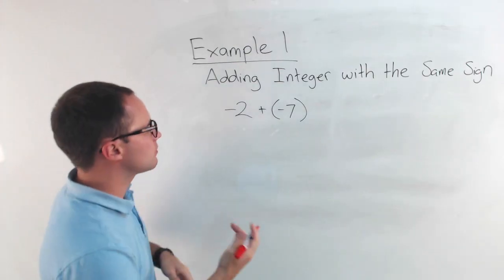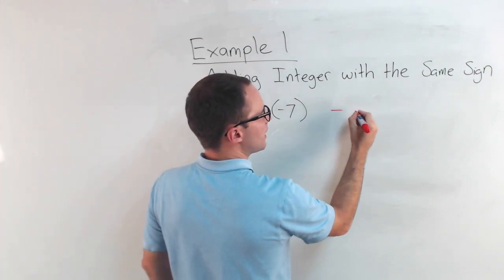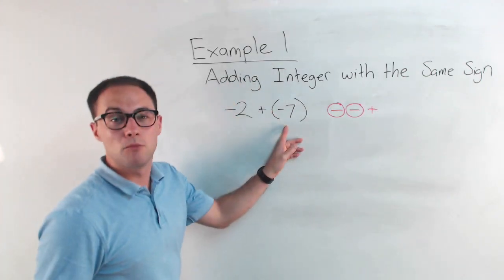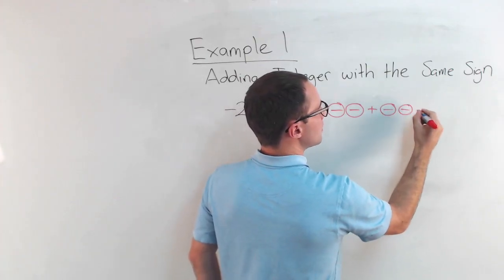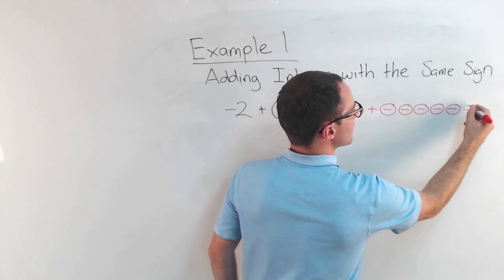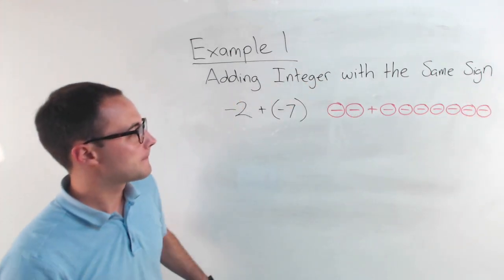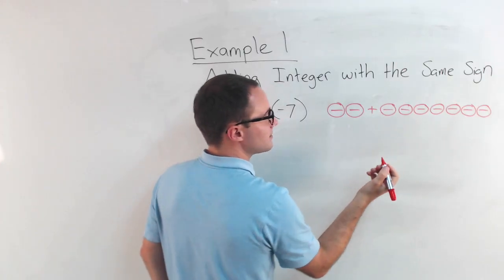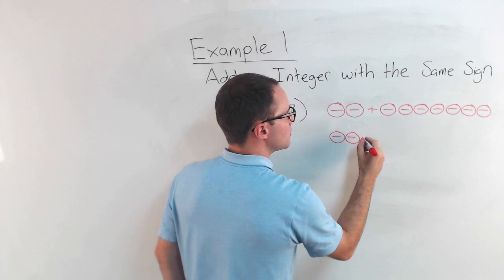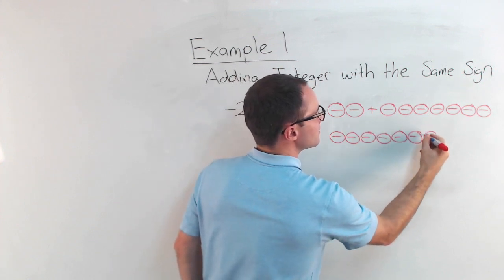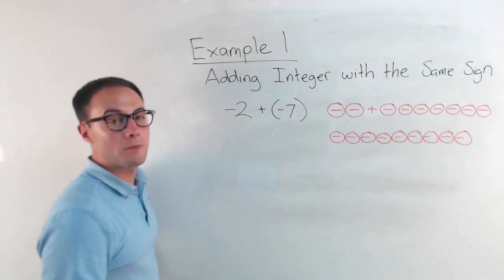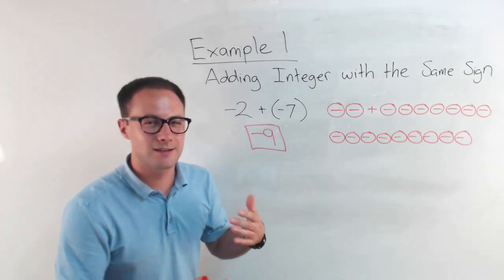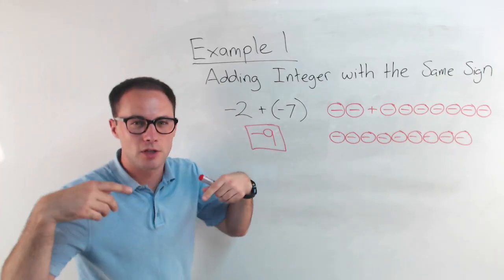One way to think about it: I have two negatives plus seven more negatives. If I've got two negatives plus seven more negatives, how many negatives do I have? Two plus seven is nine. I've got nine negatives, so my answer is negative nine. That's one way to think about it, but obviously drawing that out can take a long time. Conceptually, hopefully that helps.